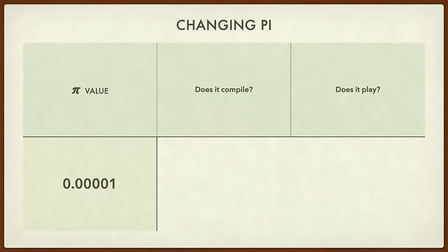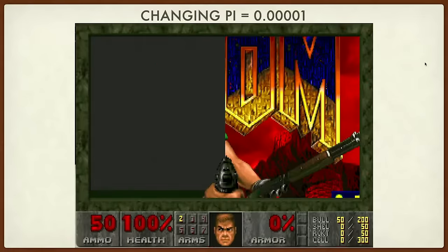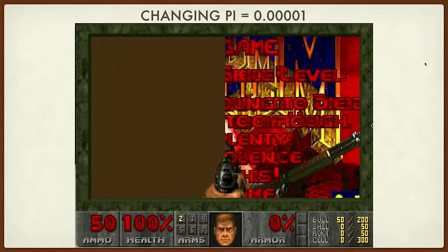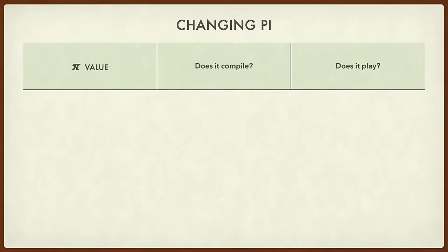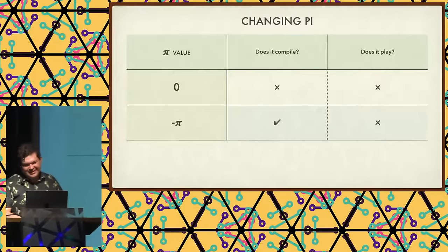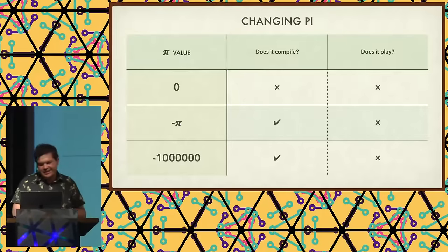Pi equals 0.0001. Does it compile? Yes. Does it play? Surprisingly, it does — unfortunately it plays, but it's not a very fun game. Pi equals 0 — does it compile? No, that's right, it does not — divide by zero — and of course it doesn't play. Negative pi: it compiles, but unfortunately it does not play. That one would have been good. Negative one million: yes, it compiles, but unfortunately it does not play.